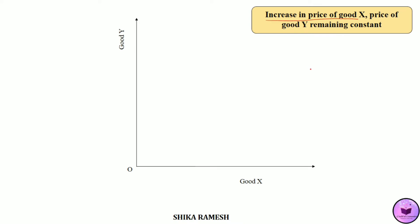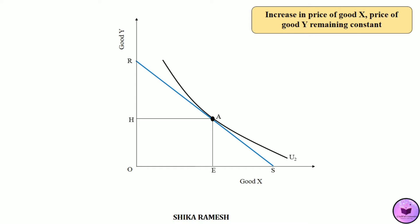Initially we have the RS budget line wherein the consumer reaches equilibrium at point A at U2 level of utility — that is, the consumer is initially at a higher level of utility. Here the consumer is consuming OE amount of good X and OH amount of good Y. Now the price of good Y remaining the same, when the price of good X increases, the real income of the consumer will decline.